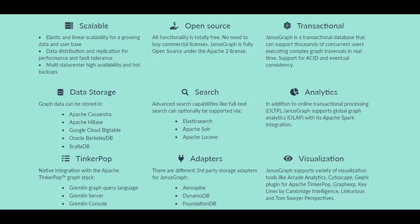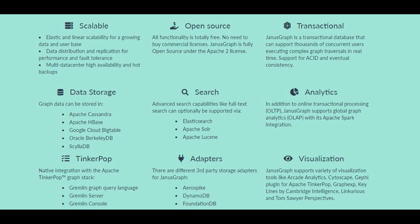JanusGraph is highly supported by TinkerPop — a link to learn more is provided in the description. For any database you need a querying language. Just as SQL uses Structured Query Language and Cassandra uses CQL (Cassandra Query Language), graph databases use a graph traversal language called Gremlin. Gremlin is a powerful querying language that searches records by traversing through all the nodes and edges created by the user. We will cover Gremlin in more detail in the next video.